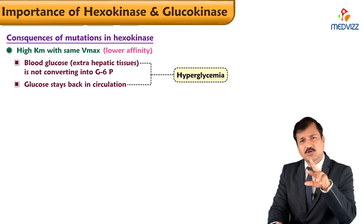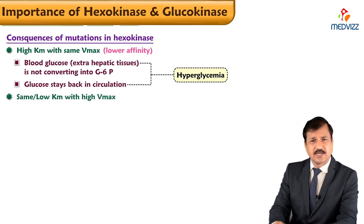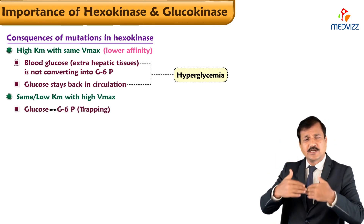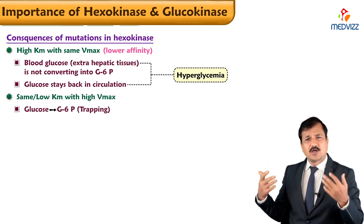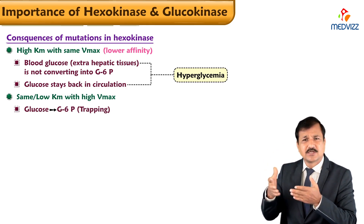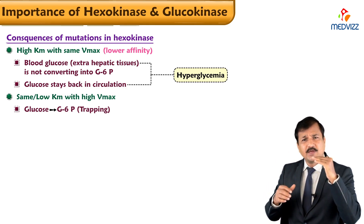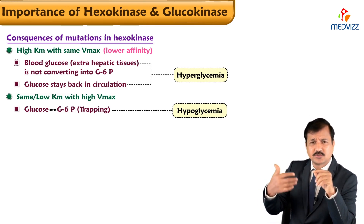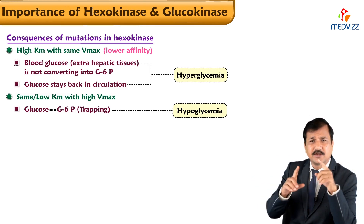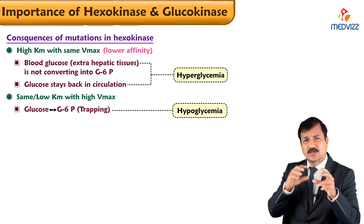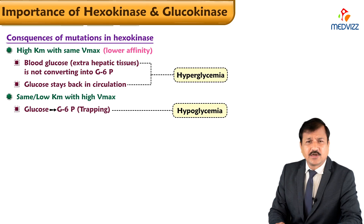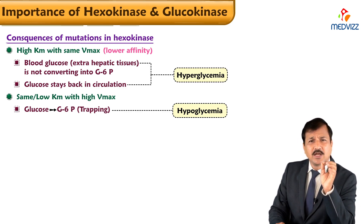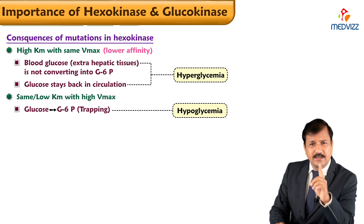Looking at the opposite: if hexokinase has the same low KM but an increased Vmax — making it a low KM and high Vmax enzyme — glucose entering cells is continuously converted to glucose-6-phosphate and trapped, because this enzyme now has a high Vmax. This hypothetical situation would result in hypoglycemia, because a large amount of glucose would be used by tissues whether they need it or not. That is why it is important for hexokinase to have low KM and low Vmax.